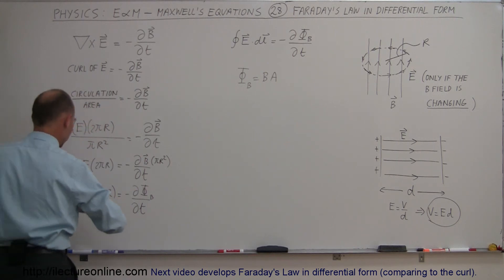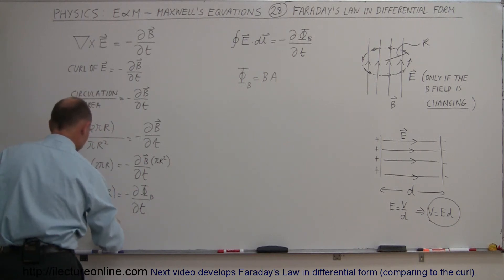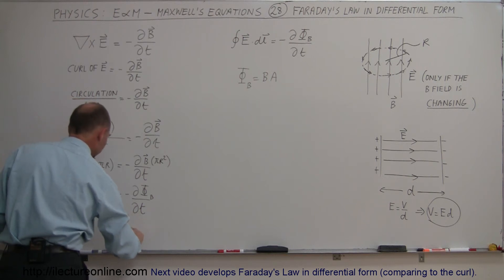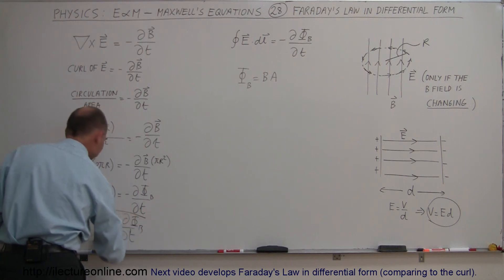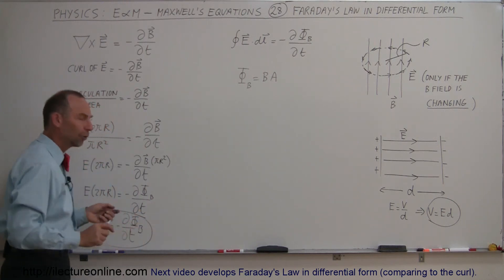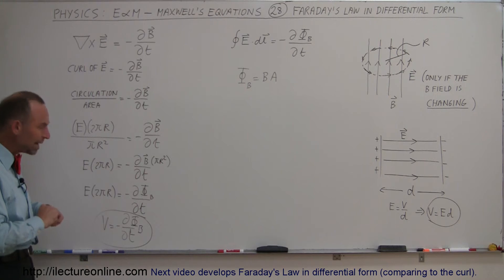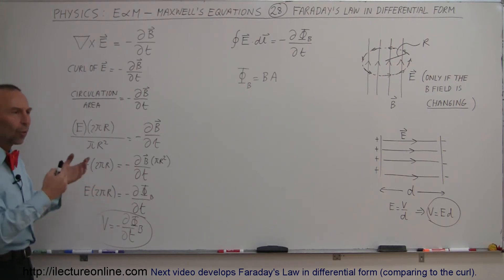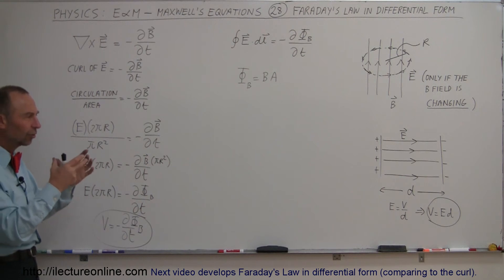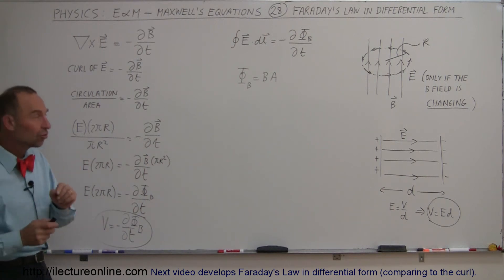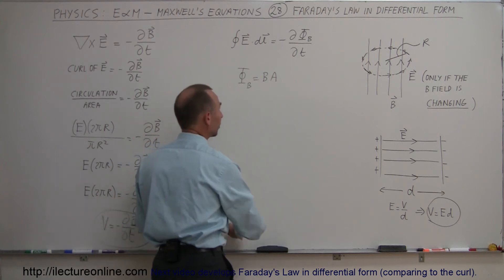This can be written as V, the potential difference, is equal to minus the partial derivative with respect to time of the flux of the B field. We have to be a little careful here — you can't really have a potential difference without conductors or wires there, but imagine if we put a real conductor there.